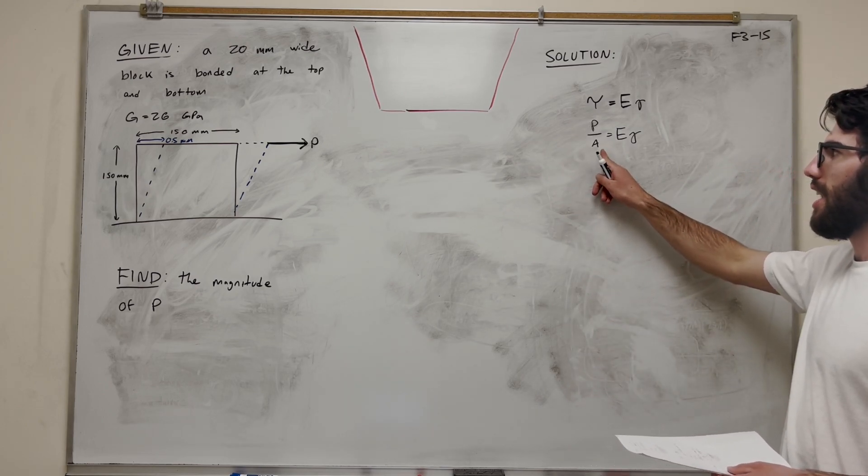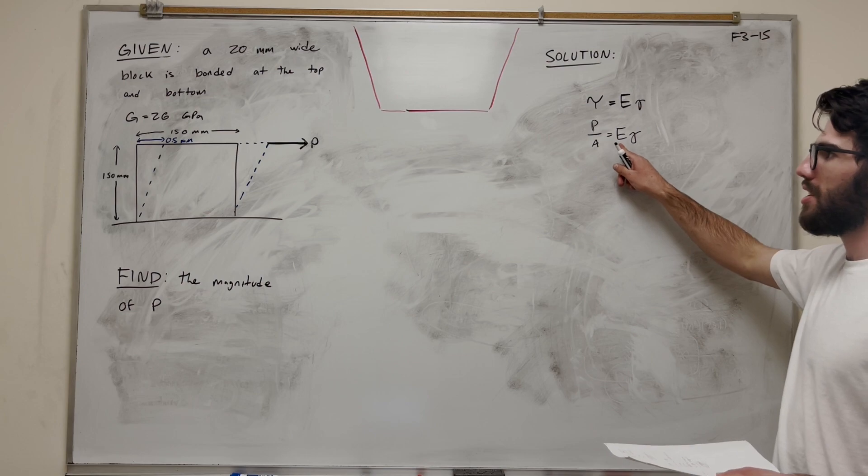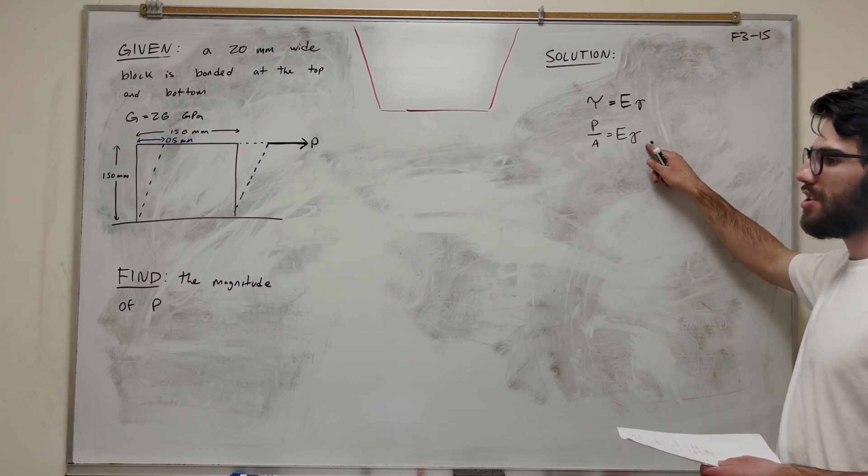We're going to need everything else. We can find the area - the length times width is pretty easy. Modulus of elasticity given to us. So we need to find that shear strain.